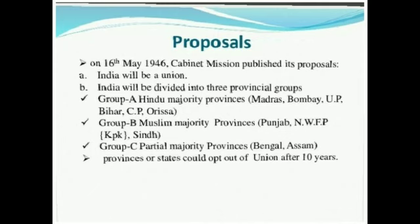Group A would have Hindu majority provinces: Madras, Bombay, UP, Bihar, CP, and Orissa. Group B would consist of Muslim majority provinces: Punjab, NWFP, and Sindh. Group C would have partial majority provinces: Bengal and Assam. Provinces or states could opt out of the union after 10 years. If a province or princely state did not wish to be part of the Indian union, they had the choice to opt out, but only after 10 years.